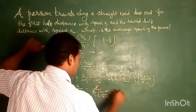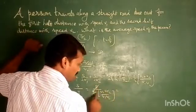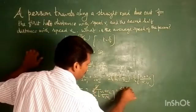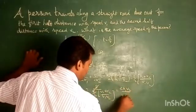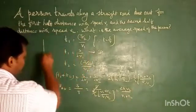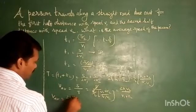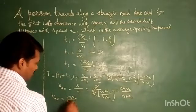So s cancels out, then dividing by the total value, this is average speed. So average speed v_av equals 2 v1 v2 by v1 plus v2.